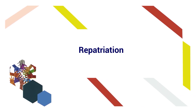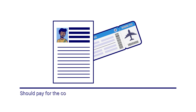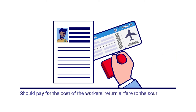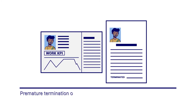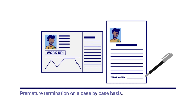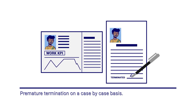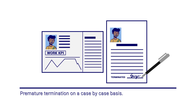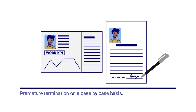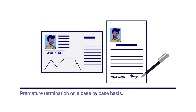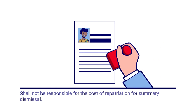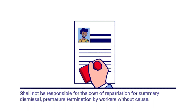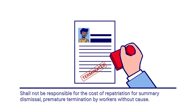Repatriation. Upon completion of the employment contract, employers should pay for the cost of the workers' return airfare to the source country as part of the repatriation process. For premature termination, on a case-by-case basis, employers should consider paying for the cost of repatriation if the premature termination is due to the employer's breach of terms and conditions of contract or not due to the fault of the worker. Employers shall not be responsible for the cost of repatriation for summary dismissal and premature termination by workers without cause.